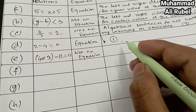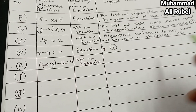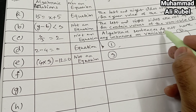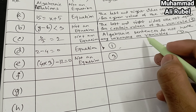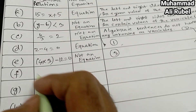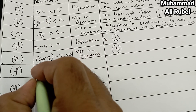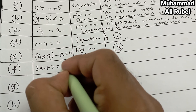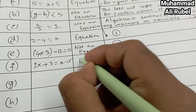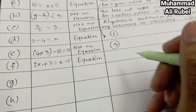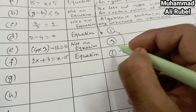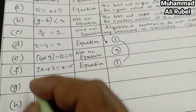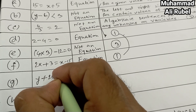For item e, we write reason number three: algebraic sentences do not have any unknowns or variables. Item f: twice x plus 3 equal x minus 15 — it is an equation. We write number one.